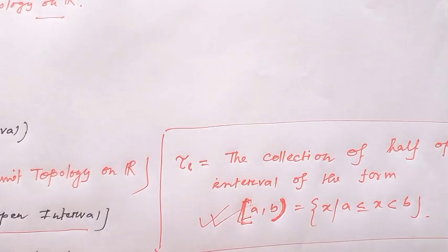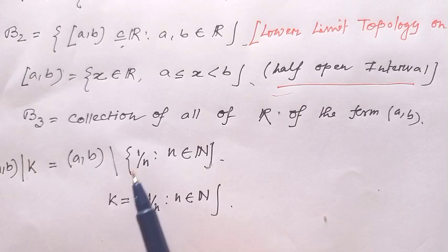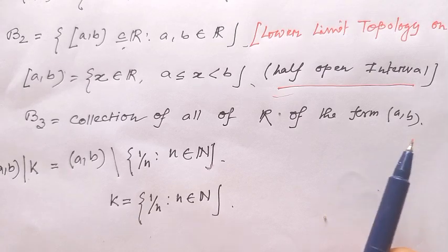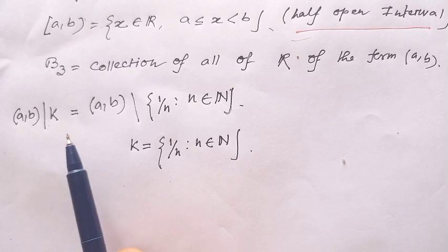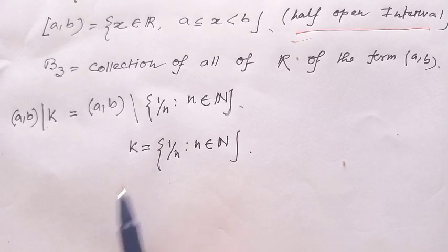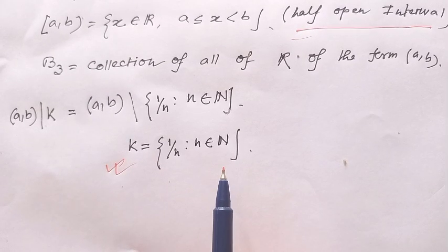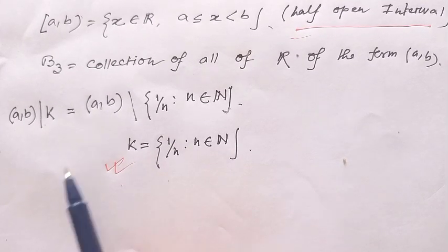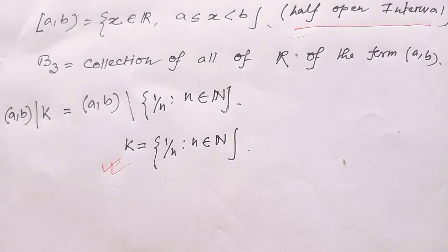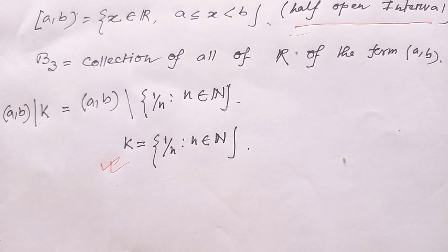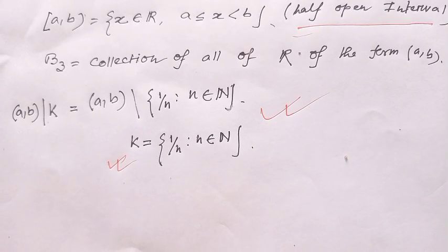The third basis B₃ consists of all sets of the form (A, B) minus K, where K is the set containing elements 1/n for n belonging to the natural numbers. That is, (A, B) omitting the set {1/n : n ∈ ℕ}. This type of set generates what is called the K-topology.